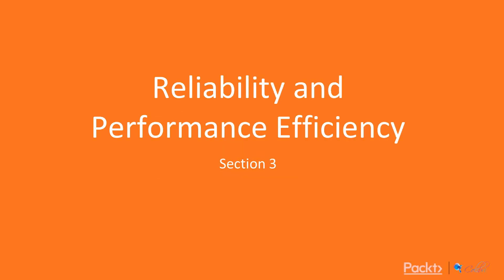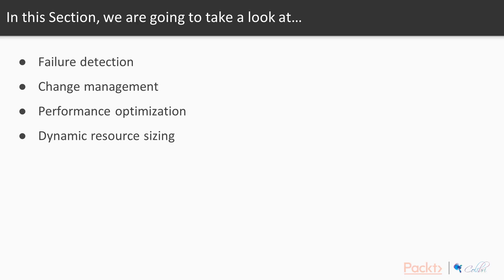Welcome back and welcome to section 3, Reliability and Performance Efficiency. In this section we're going to look at failure detection and how we can recover from failures automatically, change management and how we can effectively respond to changes in demand, performance optimization and how we can make effective use of cloud resources, and finally how we can dynamically resize resources based on demand.